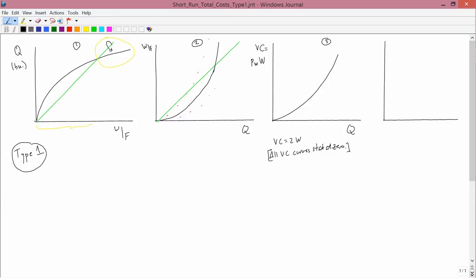So it starts at 0, and it's upward sloping, and it's convex. How about total cost? Well, total cost is fixed cost plus variable cost. We're going to have Q on the horizontal axis. Fixed cost is just fixed.